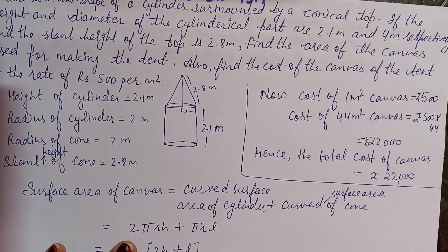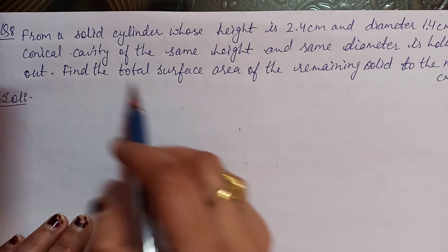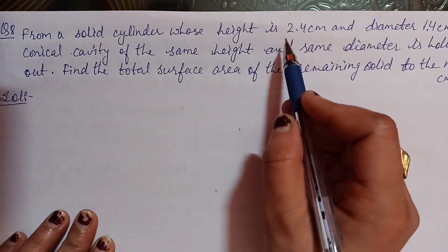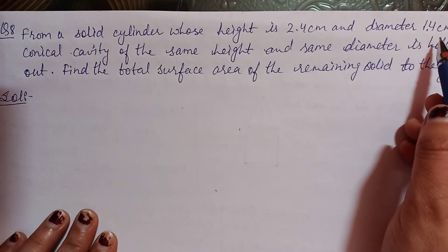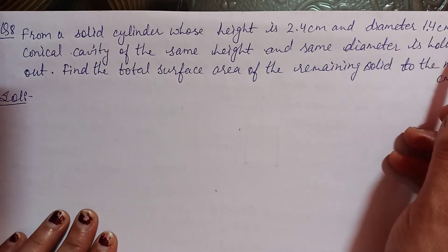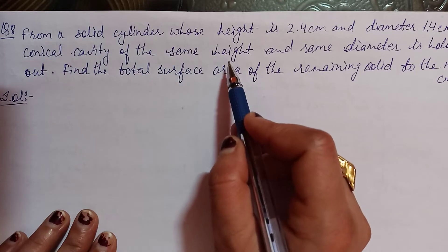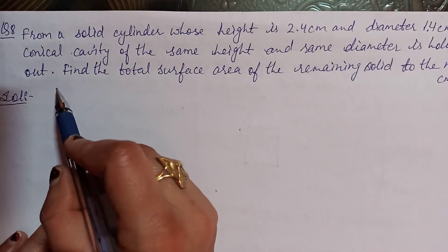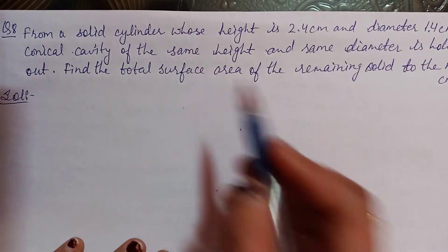Next, Question number 8: From a solid cylinder whose height is 2.4 cm and diameter is 1.4 cm, a conical cavity of the same height and same diameter is hollowed out. Find the total surface area of the remaining solid to the nearest cm.